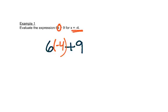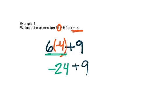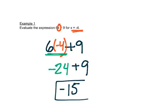Then we follow our order of operations. Order of operations says to multiply — there's nothing to do inside the parentheses and there are no exponents, so we go straight to multiplication. 6 times negative 4 is negative 24, and we still have plus 9. Negative 24 plus 9 — different signs, so we subtract and get 15. The bigger number was negative, so our answer is negative 15.